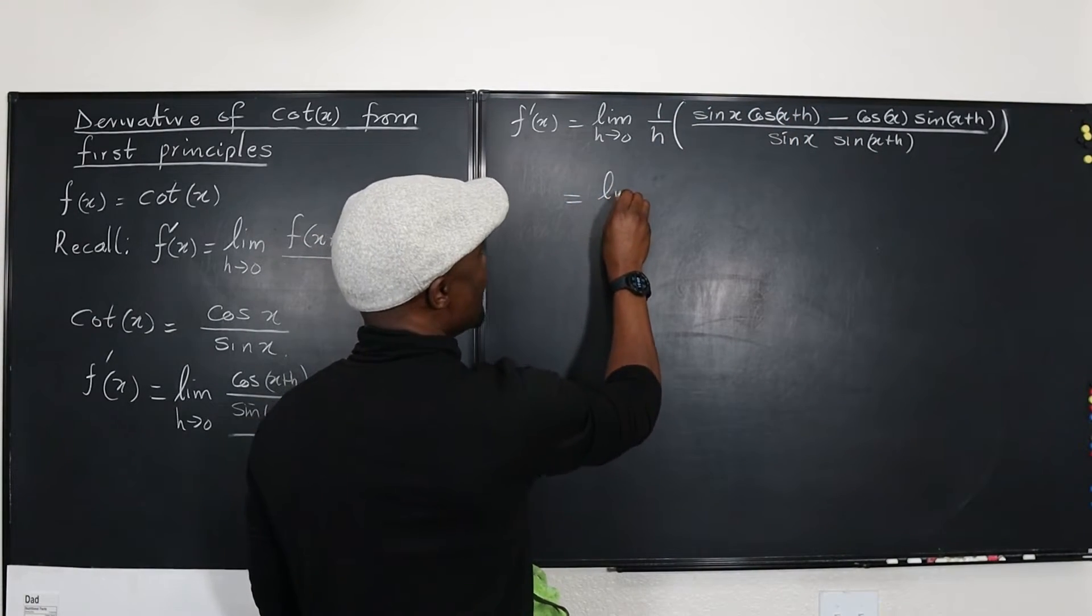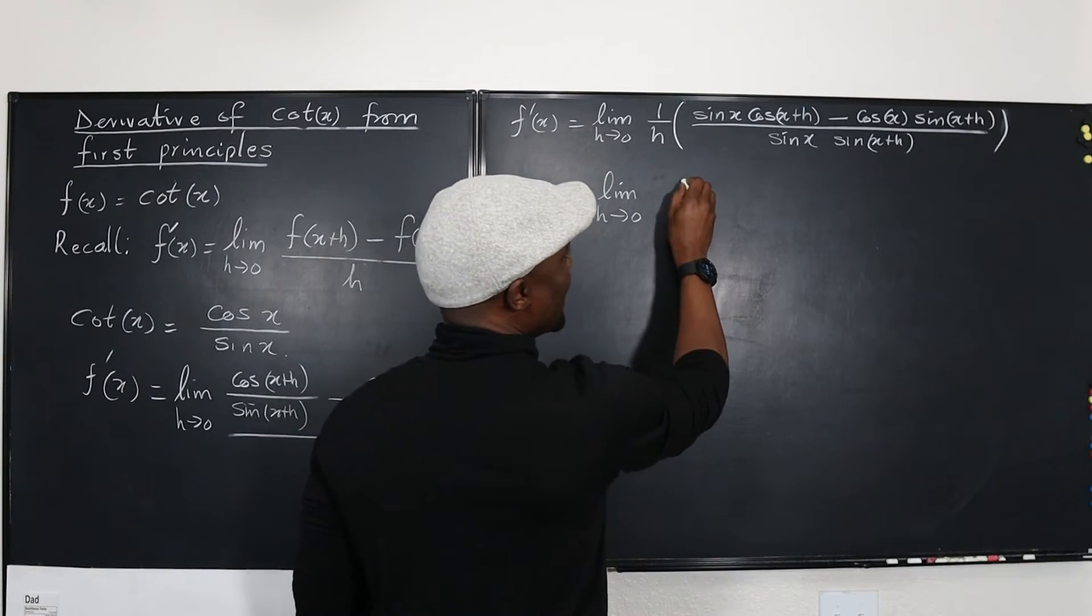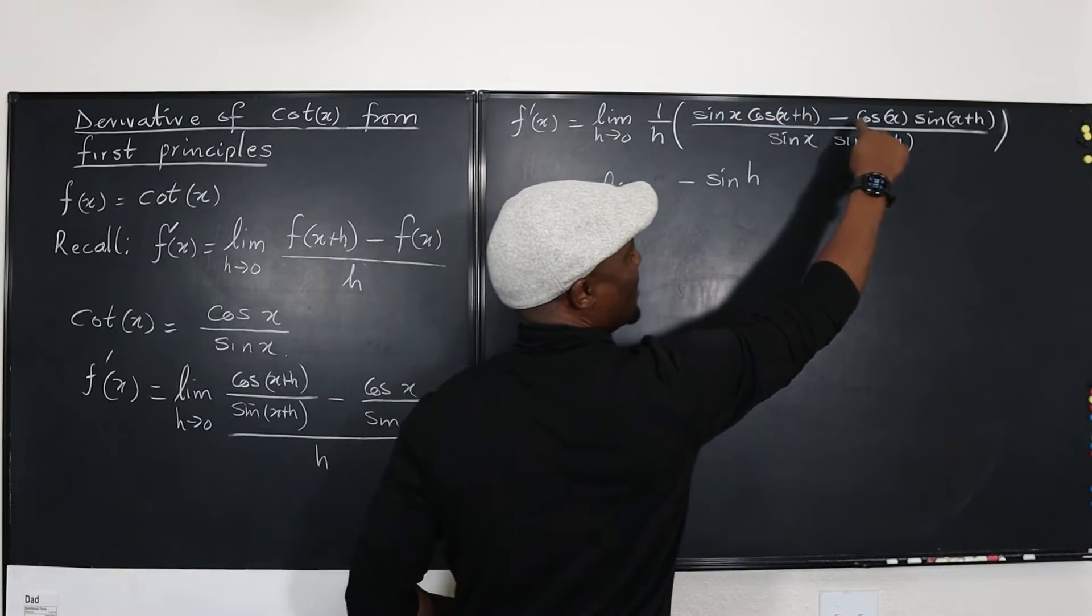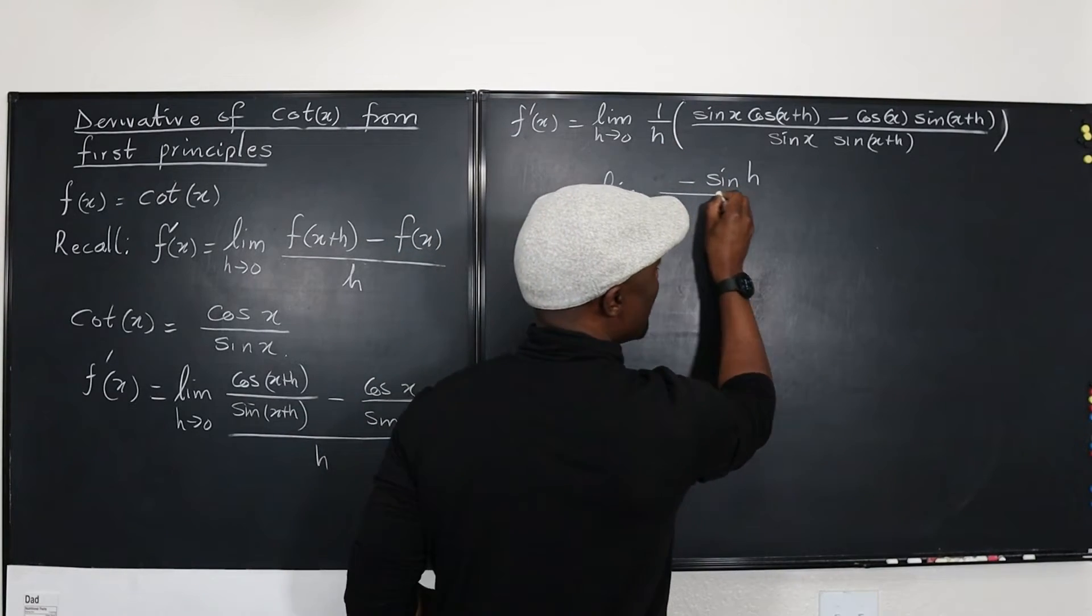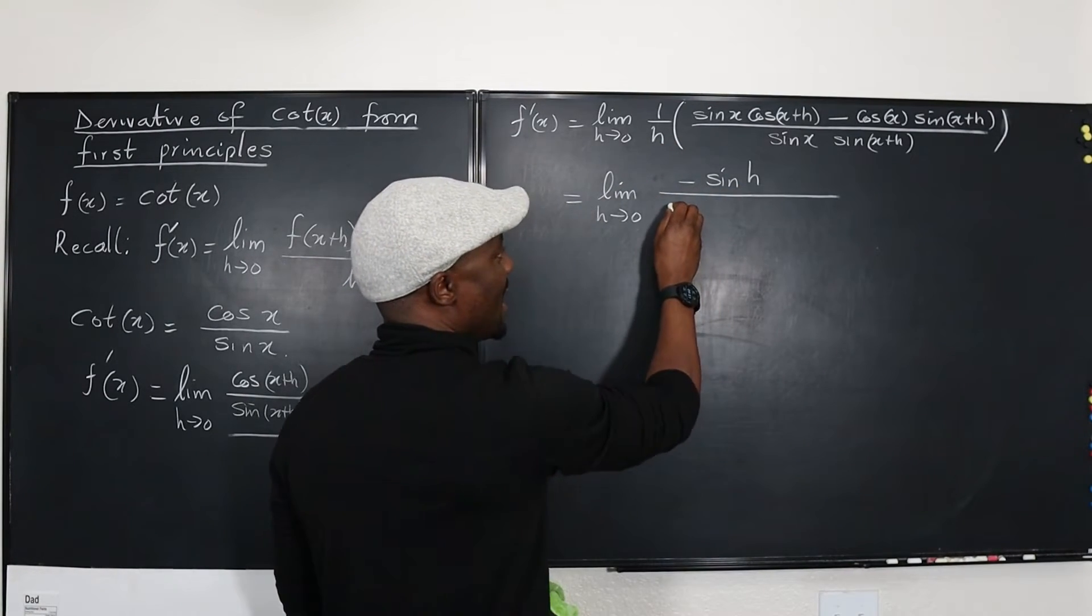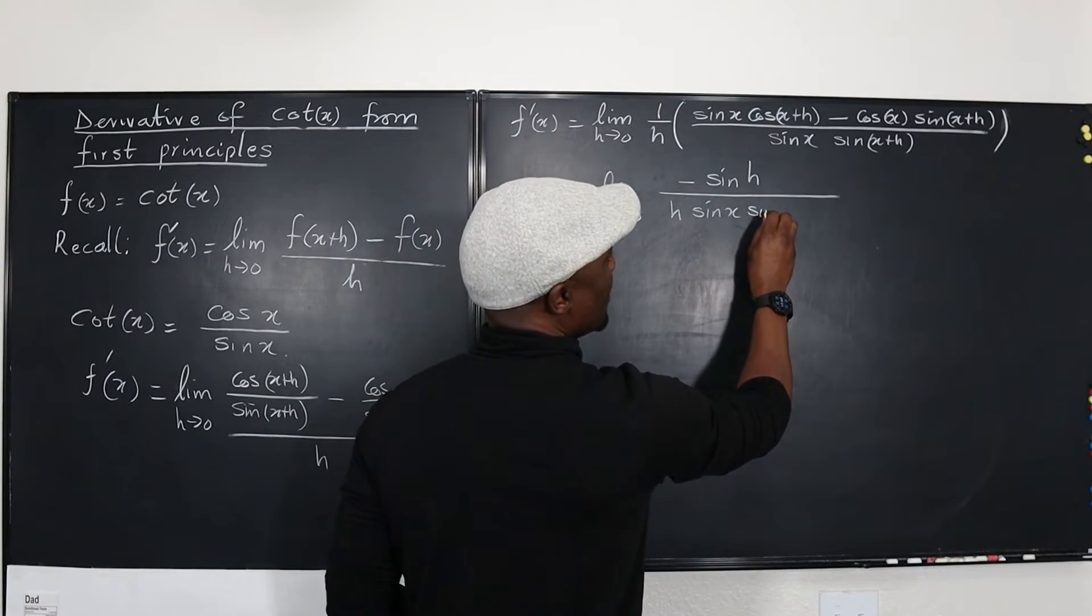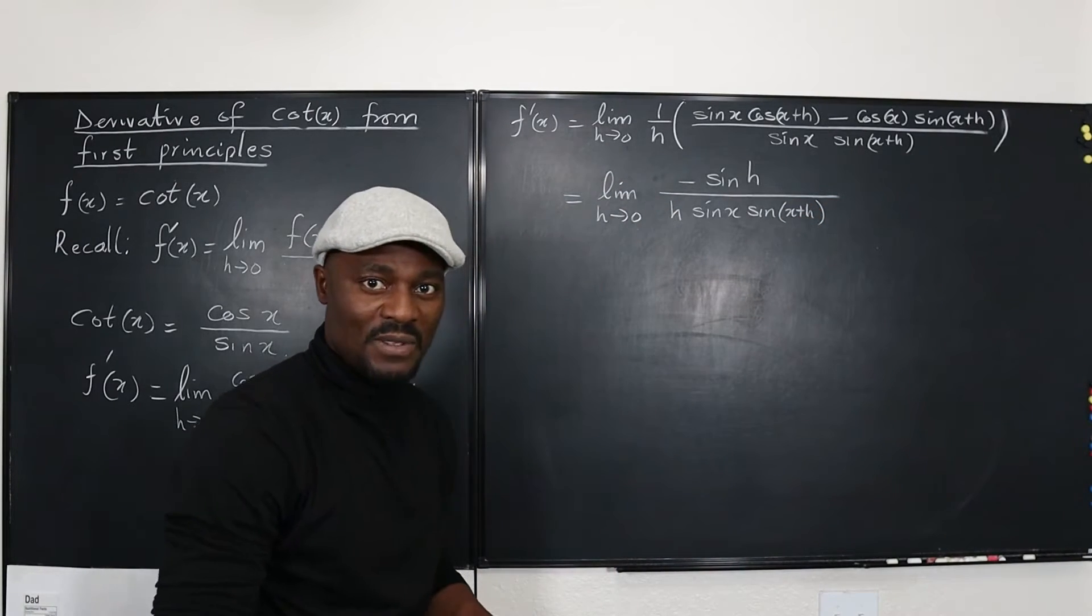So I can replace everything on top just by this. This is equal to the limit as h goes to zero of negative sine h. That's what this top part is. Divided by, now I'm bringing back my h because I want to do something nice. h times sine x, sine x plus h. Remember I told you the bottom is never the problem.